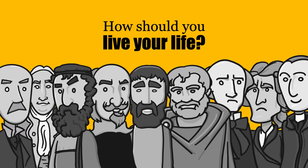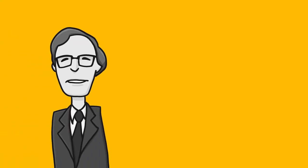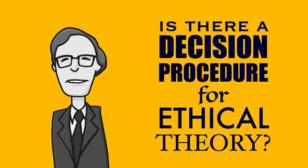Rawls is not taking this approach. He is not trying to answer the question — at least not directly — how should you live your life. Rather, he's trying to answer the question, is there a decision procedure for ethical theory? We have all these different approaches trying to answer the question, how should you live your life. Each of these approaches has their appeal, and each has their shortcomings. Sometimes there are disastrous results lurking in the background for some of these theories, yet they each do appeal to something. So we need a way to figure out whether one of these ethical theories is the right one, or a way to figure out a different moral theory that is right.